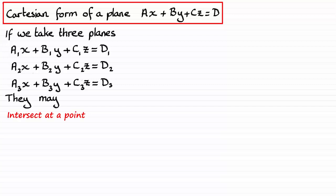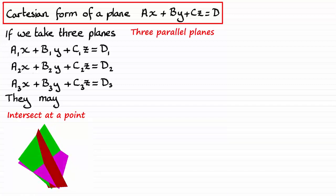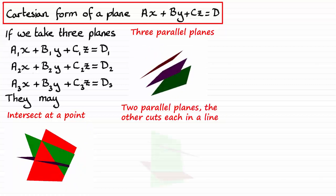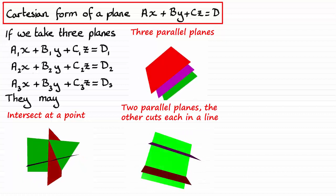They may intersect at a point, or they could be all parallel to one another, or maybe two are parallel and the other cuts each in a line.